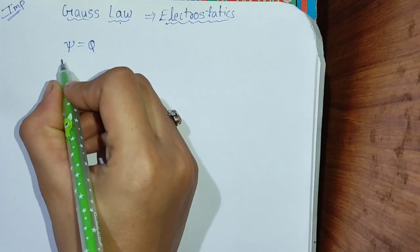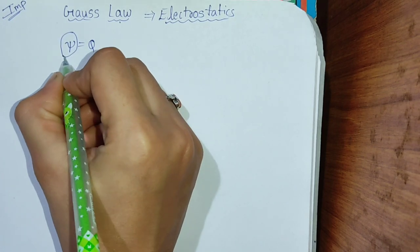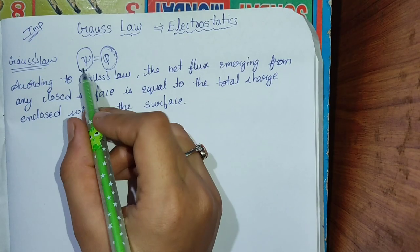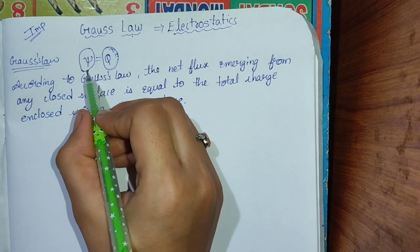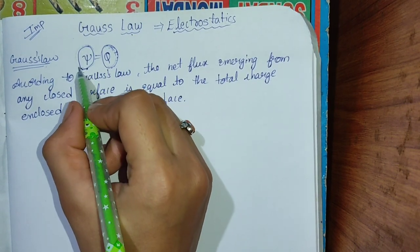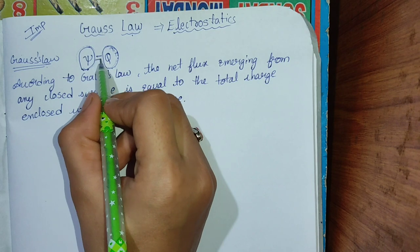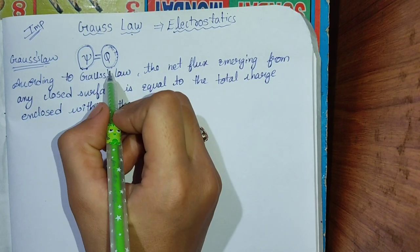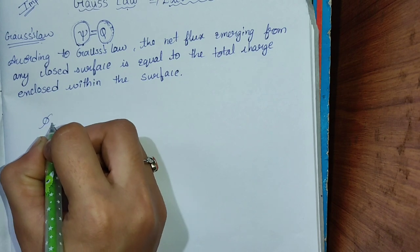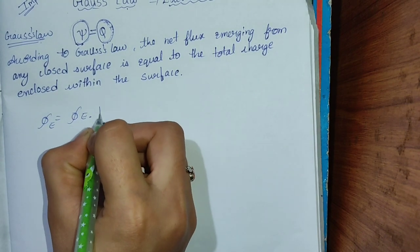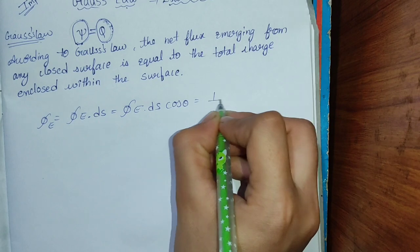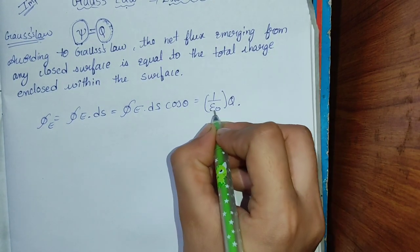Gauss's Law states that the net flux emerging from any closed surface is equal to the total charge enclosed within the surface. Mathematically, Gauss's Law can be expressed as: Φ_E = ∮ E · dS = ∮ E · dS cosθ = (1/ε₀) · Q, where this is the permittivity of free space and Q is the enclosed charge.